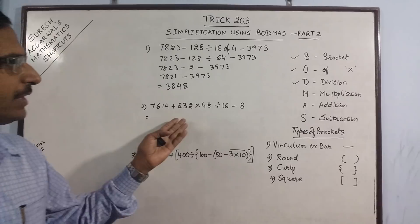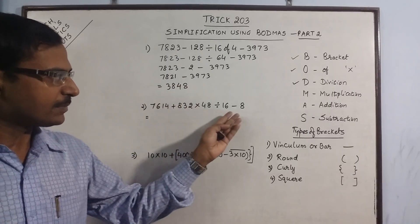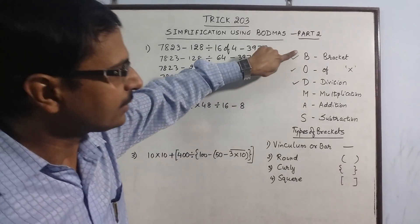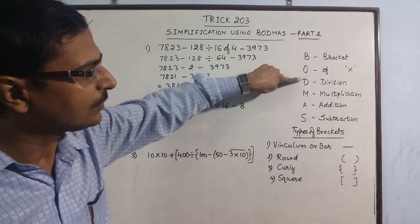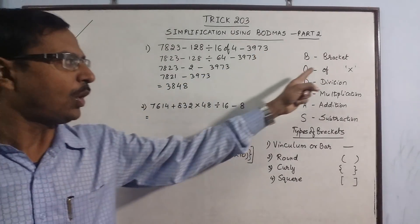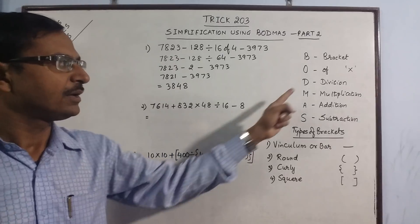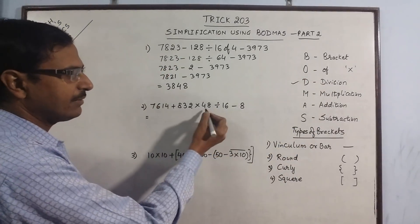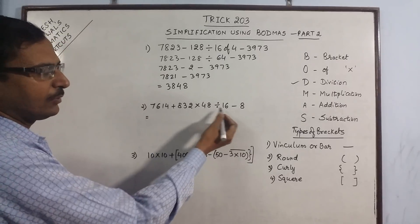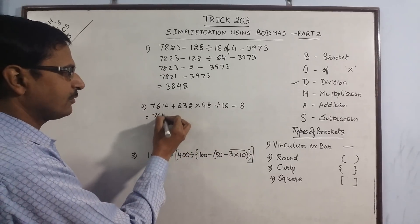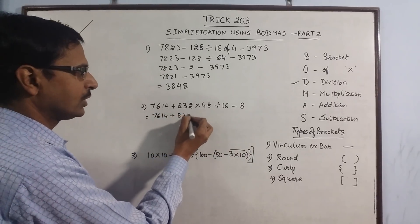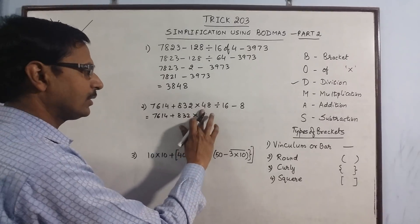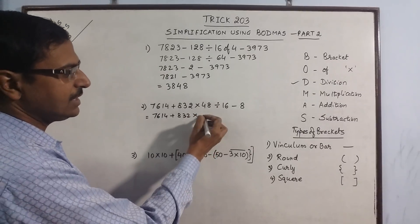Likewise you can simplify these problems. Again, see the same sequence can be followed. Bracket is not there, 'of' again is not there, divide. Now start with divide, so here you have a term involving division: 7614 plus 832 into 48 divided by 3, 16 that is 3.